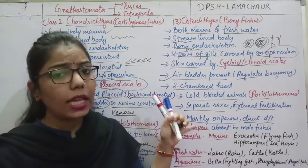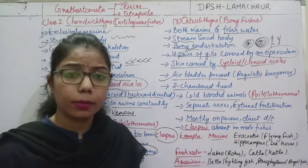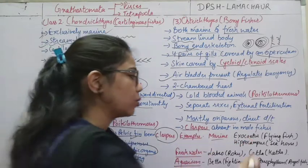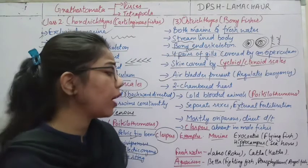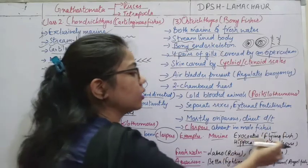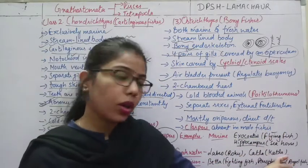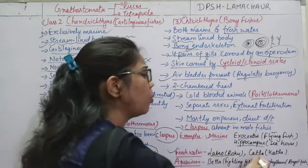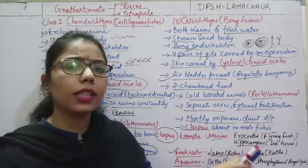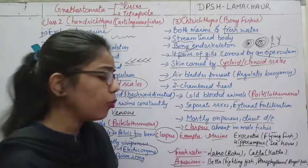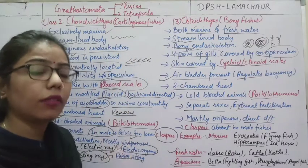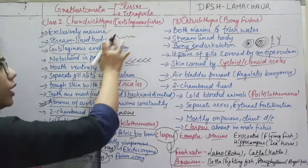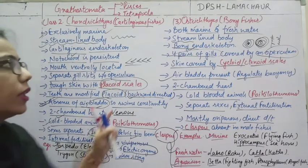Osteichthyes can be marine or freshwater. Marine fish examples: Exocoetus (flying fish) and Hippocampus (seahorse). Freshwater fish examples: Labeo, Rohu, Katla — which we also consume. Aquarium fish examples: Betta and Pterophyllum. It is important to memorize all examples along with their common names. We have now completed three classes under Pisces superclass.